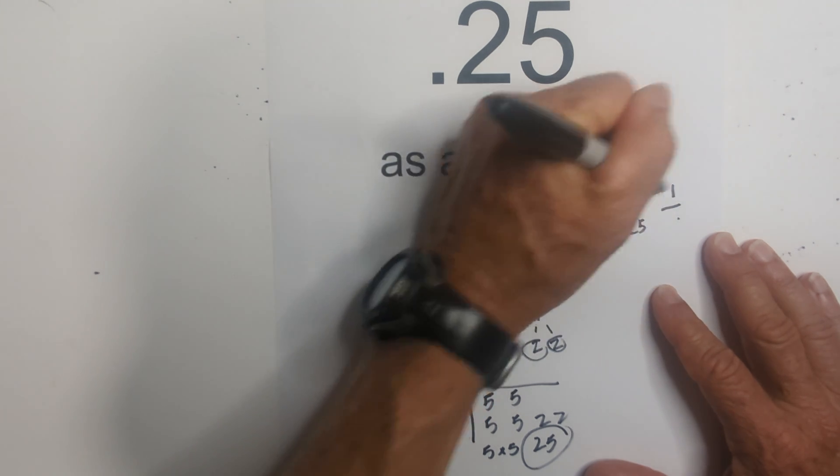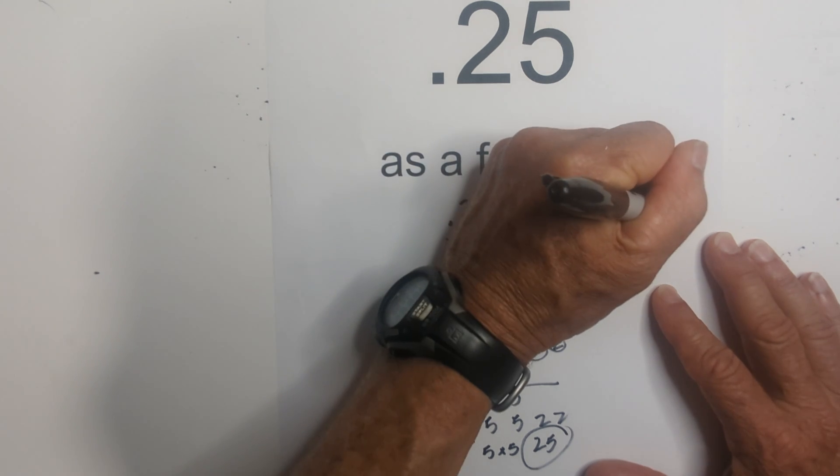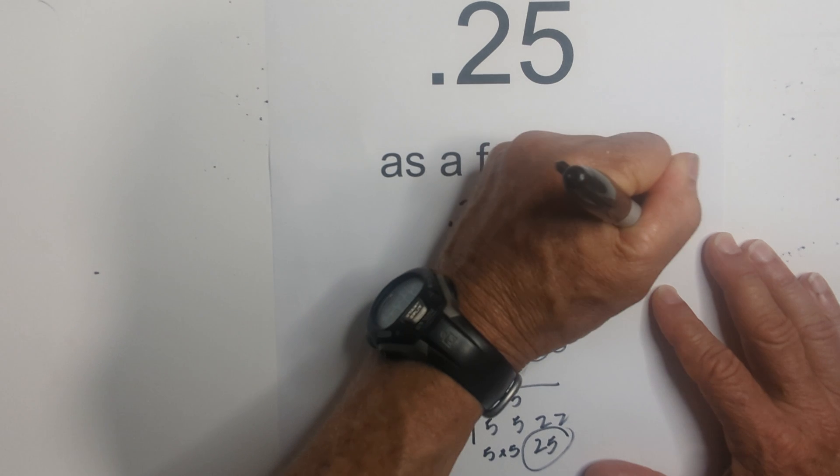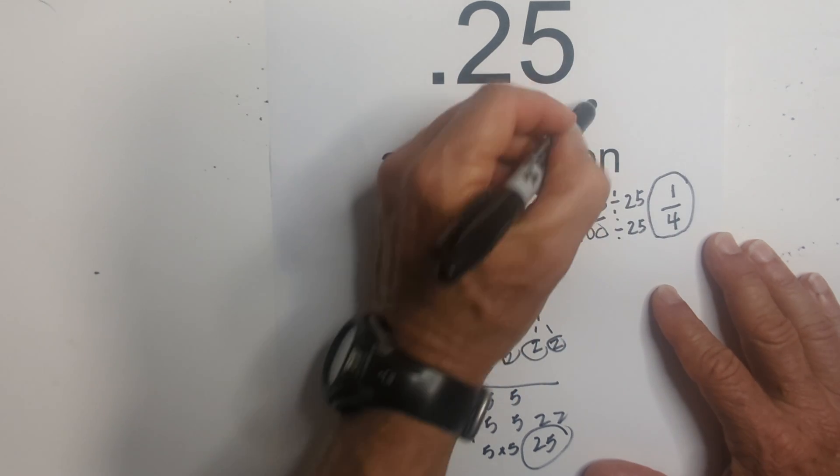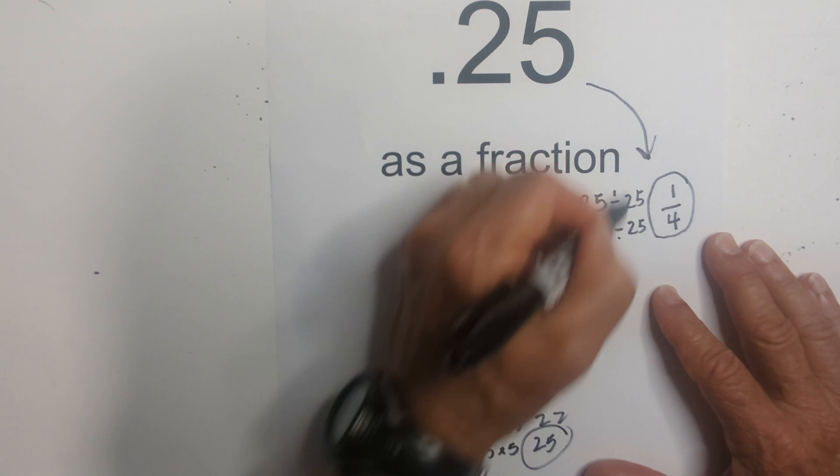And 25 divided by 25 is 1, and 100 divided by 25 is 4. So 25 hundredths as a fraction is 1 fourth.